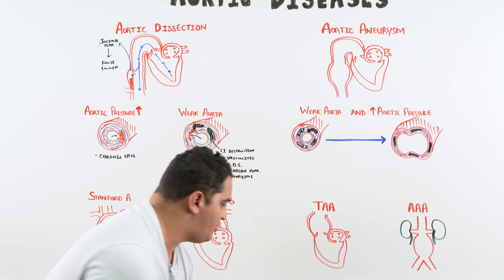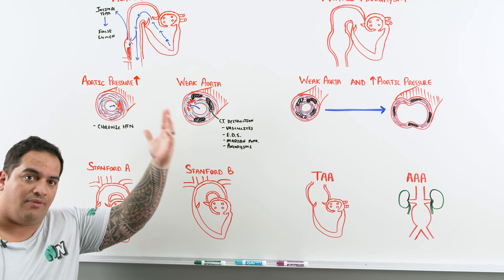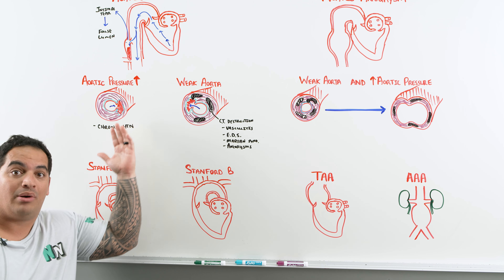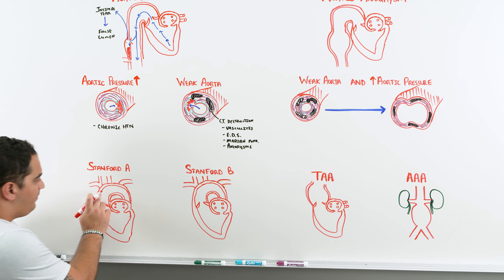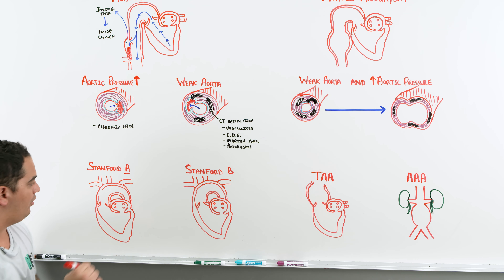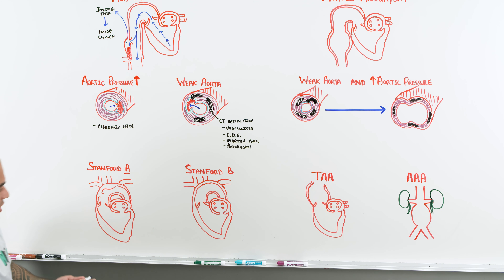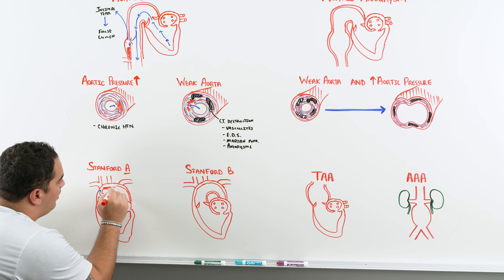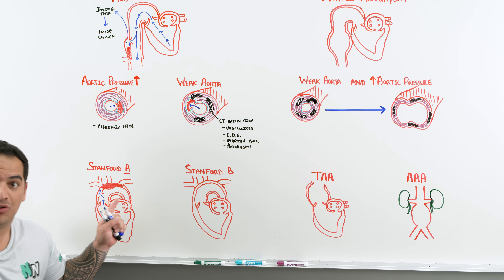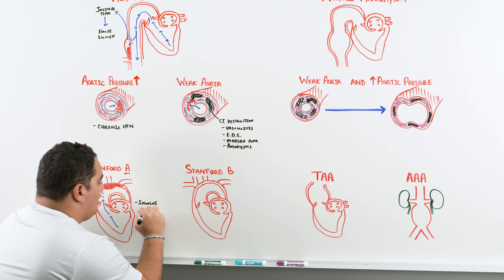Now let's classify aortic dissections. Stanford Type A dissections must involve the ascending aorta — that's the defining factor. Blood flows from the left ventricle up into the false lumen, and the dissection may continue to propagate further, but it must originate at the ascending aorta.